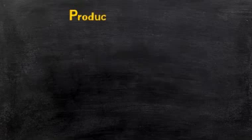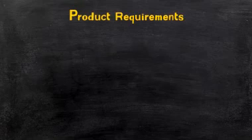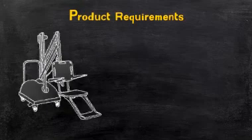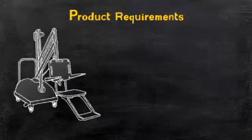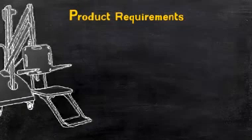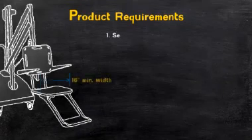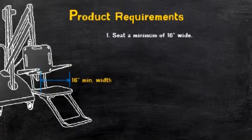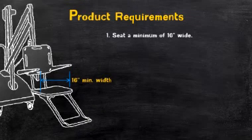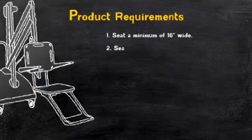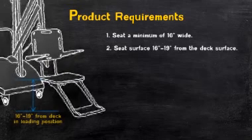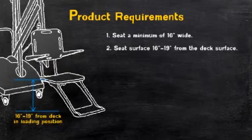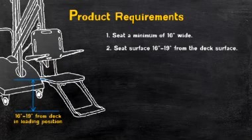Let's look at these requirements a little closer. First, there are the product or P requirements. The seat must be a minimum of 16 inches wide, and the seat surface must be between 16 inches and 19 inches from the deck surface.